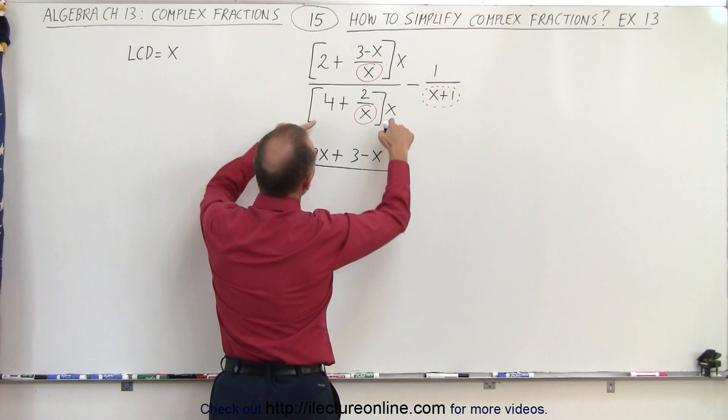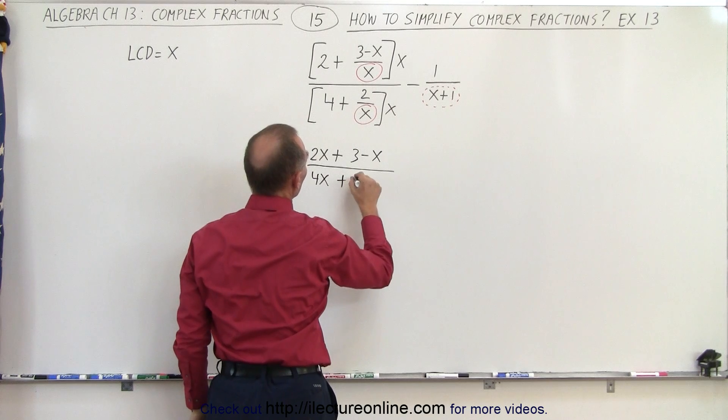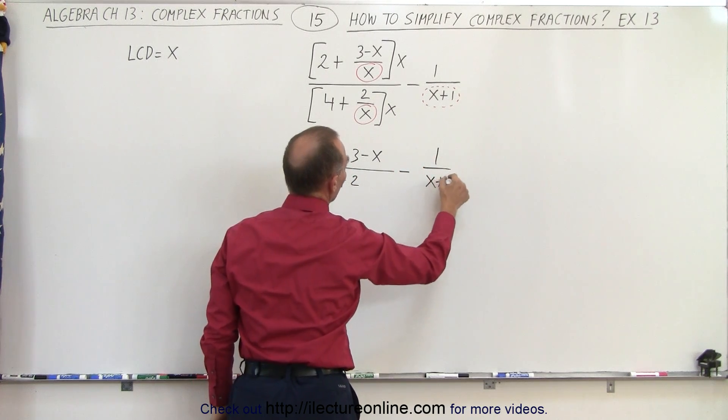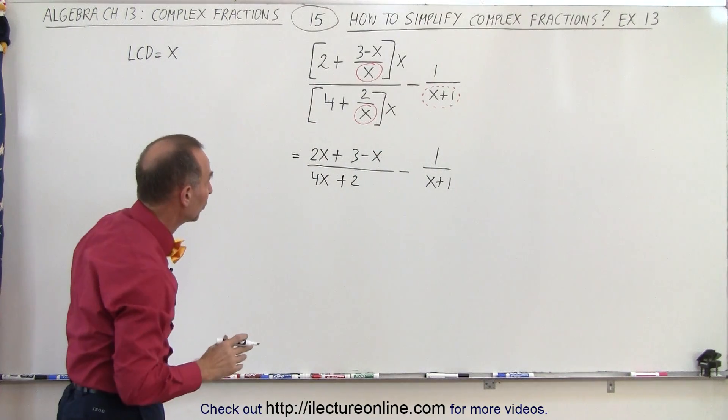Divided by, here again it's 4 times x and here when I multiply the x's cancel out I get plus 2, and of course we can't forget the minus 1 over x plus 1. I'm going to simplify this by simply collecting common terms.